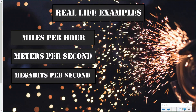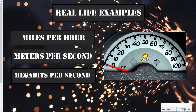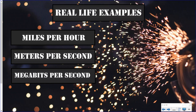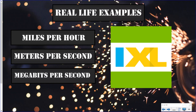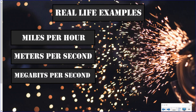You use unit ratios all the time and might not even know it. For instance, if you're in the car, the odometer might say miles per hour — so when your parents are going 84 miles per hour in a 70 zone, you can say their unit ratio is too fast! It might also be meters per second when measuring time. A lot of unit ratios are used to measure time or money. Another important one: megabits per second or gigabytes per second — that's how fast your internet is running.